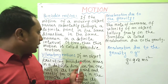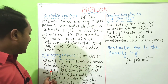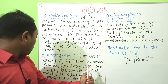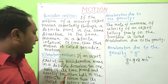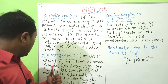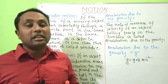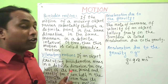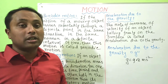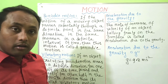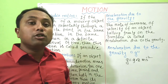The next definition is Vibratory Motion. If an object executing periodic motion moves in a definite direction for one half of its time period and exactly in the opposite direction for the other half, then it is called vibratory motion. An example of vibratory motion is a simple pendulum.